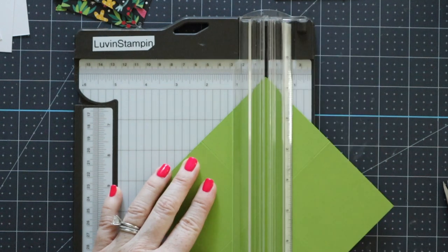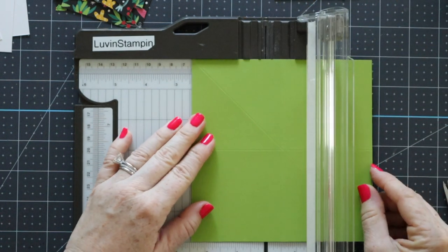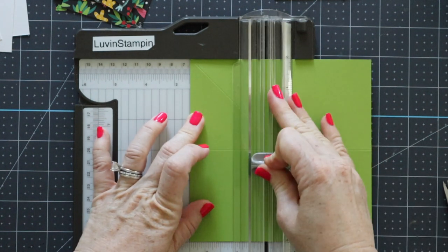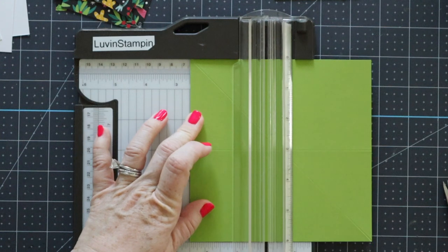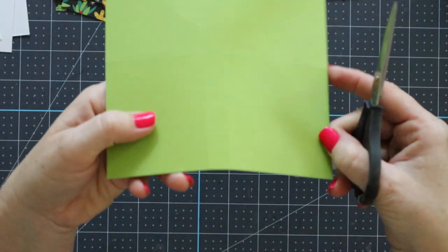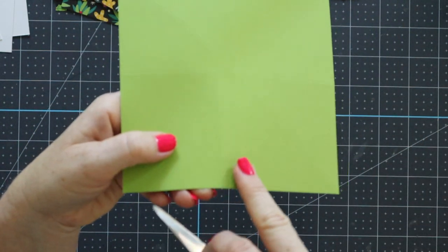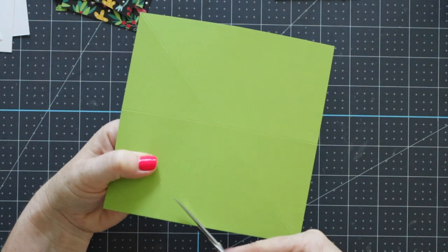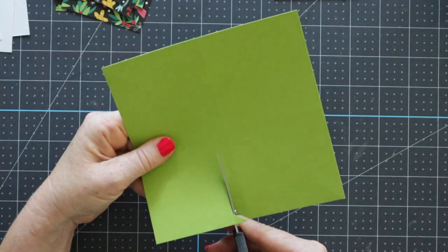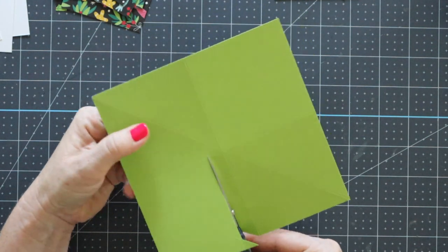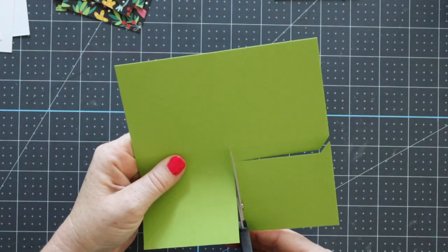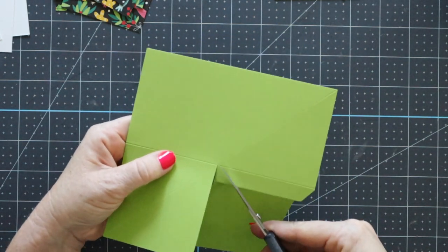After we get all of these scored, we're going to assemble them, and then after we assemble them, we're going to add all of our decorative pieces. First of all, let me back up. There's a free project sheet over on my blog. Do not stress about writing all these measurements down. I've never made a carousel card before and I made a prototype and then I made this one. They're really not that hard. If I can do it, you can do it.